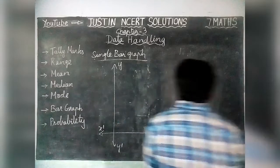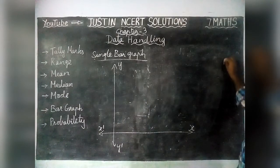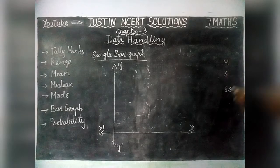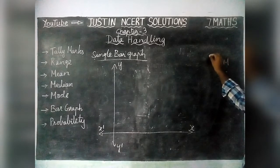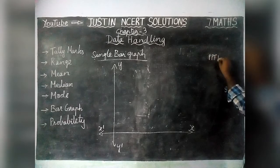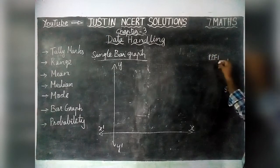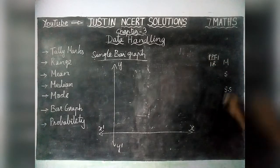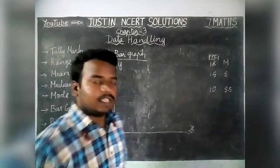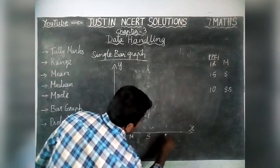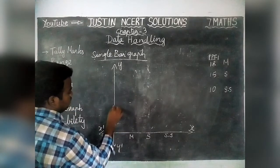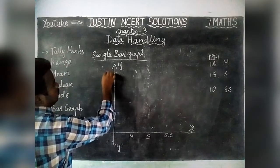Now we are going to draw a bar graph for subjects: Maths, Science, and Social Science. We are taking Pen-Paper Test 1 marks out of 20. In maths: 18 marks. In science: 15 marks. In social science: 10 marks. In the x-axis we take subjects, and in the y-axis we take marks — 5, 10, 15, 20.